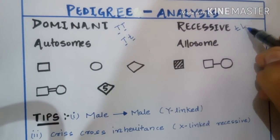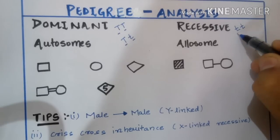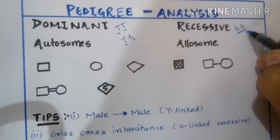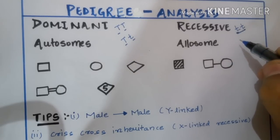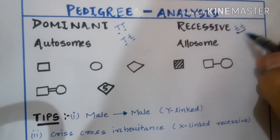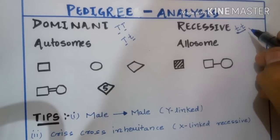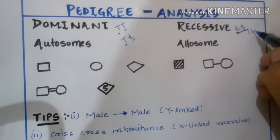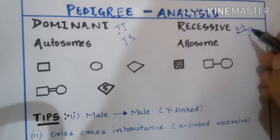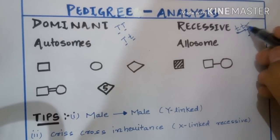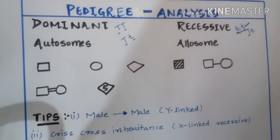The recessive gene expresses itself only in the presence of the same gene. So 'tt' is recessive. If capital T is present in place of small t, then T will be dominant and the small t will be recessive. That covers dominant and recessive traits.